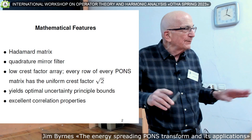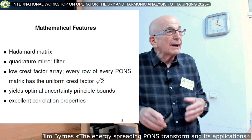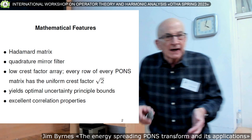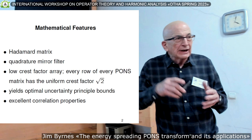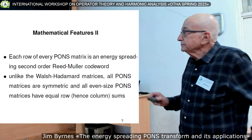This also yields, in a certain specific sense, optimal bounds with respect to a kind of global uncertainty principle. And the correlation properties — which are extremely important for digital signal processing — of these rows or columns of the PONS matrices are excellent.